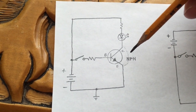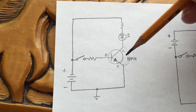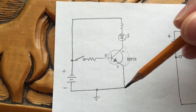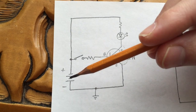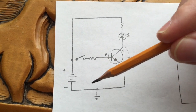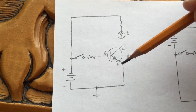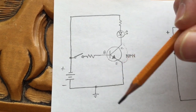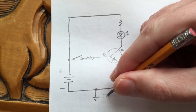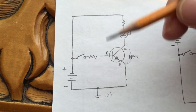NPN transistors are very common, and they're almost always used as switches with this type of configuration, where the emitter is connected to ground — your negative voltage supply — and that's usually the common terminal in the circuit. It's a common point of reference for voltage, and we usually consider the ground reference to be zero volts, and everything is measured relative to that.